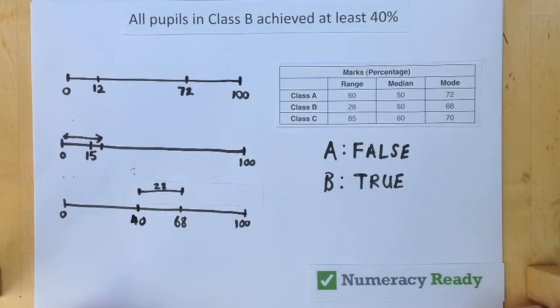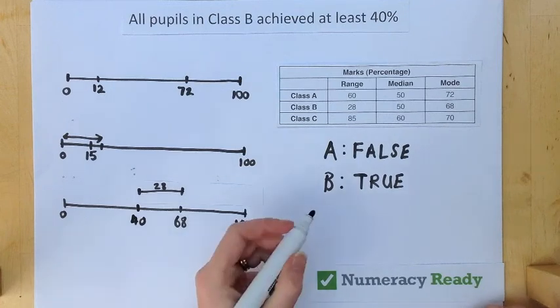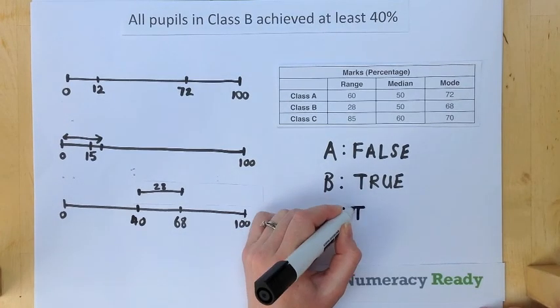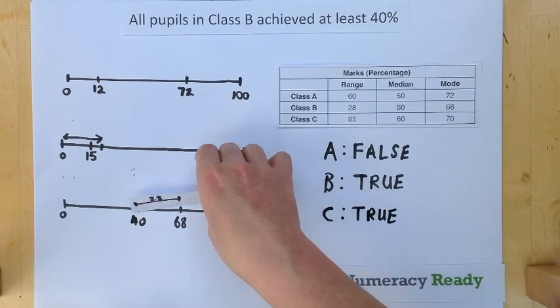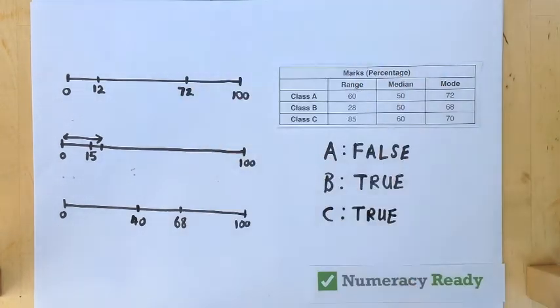All pupils in Class B achieved at least 40%. Hopefully, you can see that's true. And hopefully, that's going to help you with that tricky question should you see it in your numeracy skills test.